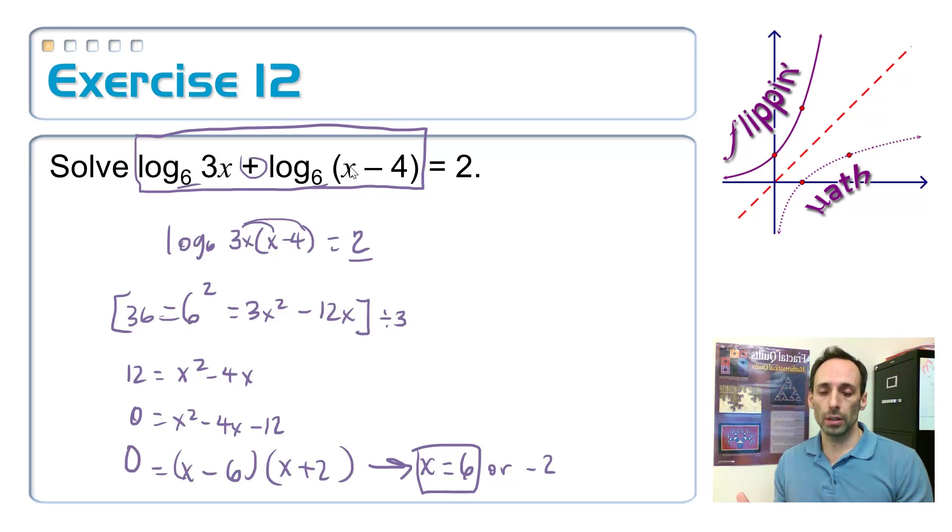And 6 minus 4 is 2. That's also positive, so this one is okay. If I put in the negative 2, 3 times a negative 2 makes this a negative 6, and this just makes that equation undefined, so I have to throw it away.